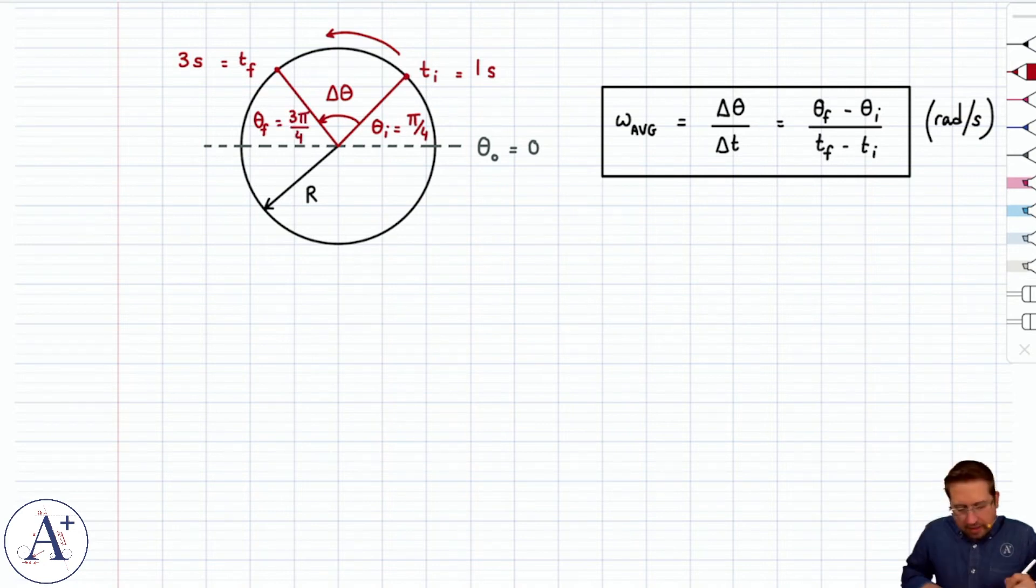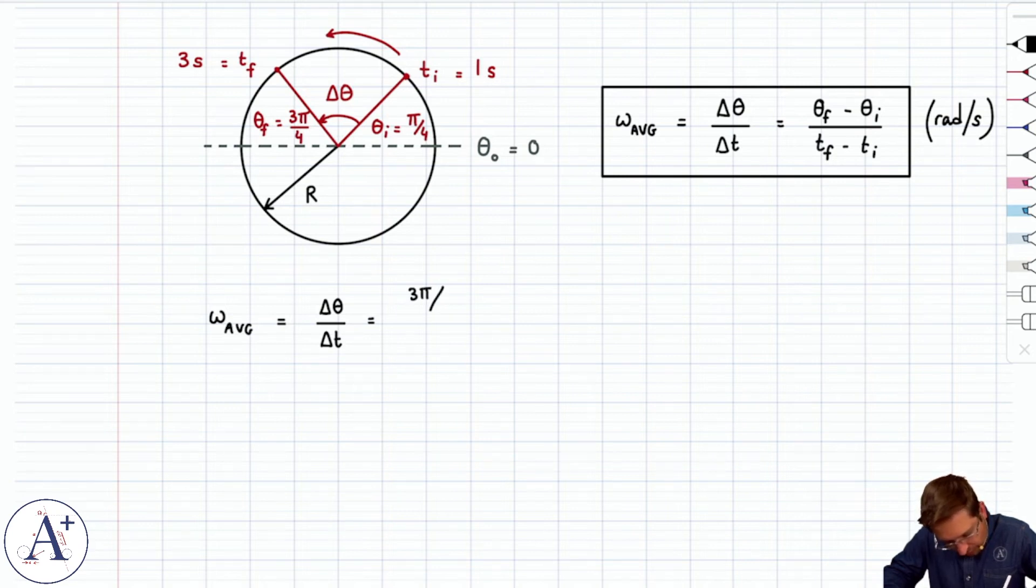3 pi over 4 is going to be that angle. So, and here, if you wanted to compute omega average, you would say it's delta theta over delta t, so that's 3 pi over 4, now we've already computed this angular displacement, so we know it's pi over 2, but 3 pi over 4 minus pi over 4 divided by 3 minus 1, which is 2. So, numerator is going to be pi over 2 divided by 2, is going to be pi over 4 radians per second.